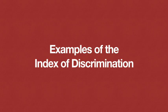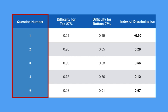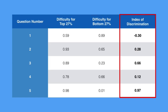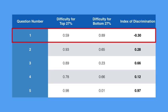So now let's take a look at some examples. Column one is a question number. Let's assume for columns two and three that we've already taken the top and bottom 27% based on their total quiz score and calculated the difficulty level for each group. The fourth column, the index of discrimination, is found by subtracting the bottom from the top. Going through the results, we can see that question one is negatively discriminating — a greater proportion of the bottom 27% got it right when compared to the top 27%. This question likely needs to be rewritten or thrown out entirely.